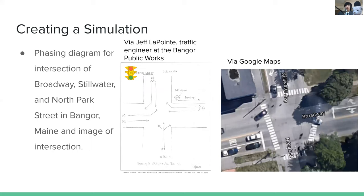To create an accurate simulation, we modeled it off a real intersection in Bangor. In the middle you can see the phasing diagram at the same orientation as the overhead view on Google Maps on the right. The phasing diagram shows all directions where cars can move from their respective inbound lanes to outbound lanes. We altered that slightly for the simulation, as Simon will discuss in the next slide.